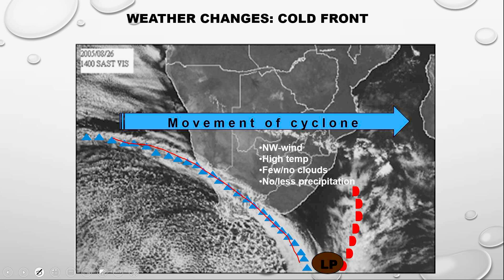Now let's look at weather in the warm sector. As we said when looking at the synoptic weather chart, there is a northwesterly wind — coming from the northwest and going to the southeast. Remember, this is a warm sector, so the temperature is going to be high. There'll be very few clouds — rather say there'll be a few light clouds to make your point clearer. And the less your cloud cover, the less your precipitation, so there'll be less precipitation.